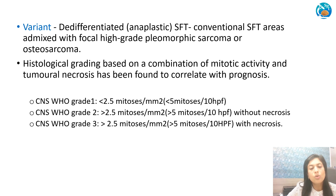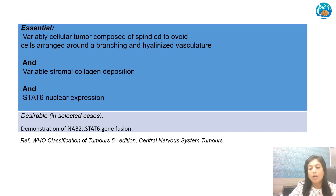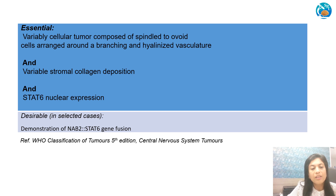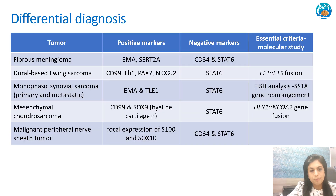There is a variant called dedifferentiated or anaplastic solitary fibrous tumour which exhibits conventional areas admixed with foci of pleomorphic sarcoma or osteosarcoma. Histological grading is based on mitotic activity and tumour necrosis and correlates with prognosis. CNS WHO Grade 1 shows mitosis less than 5 per 10 high-power fields. Grade 2 shows mitotic activity more than 5 per 10 high-power fields without necrosis. Grade 3 shows more than 5 mitoses per 10 high-power fields with necrosis. The essential diagnostic criteria per WHO CNS include a variably cellular tumour of spindle to ovoid cells arranged around branching hyalinized vasculature with variable stromal collagen deposition and nuclear STAT6 expression. The desirable criterion is demonstration of NAB2-STAT6 gene fusion.